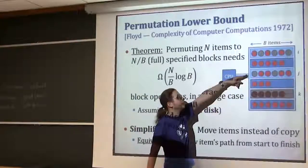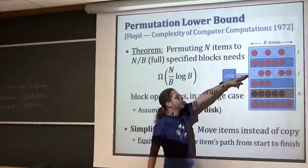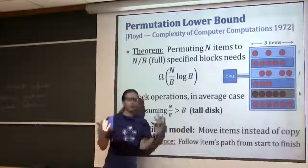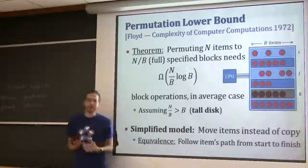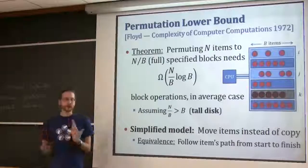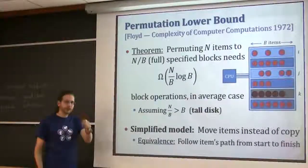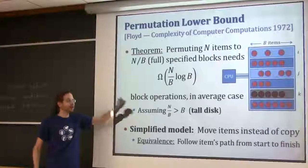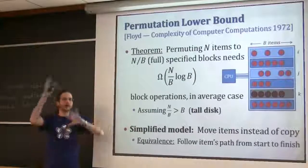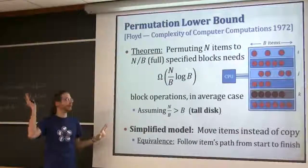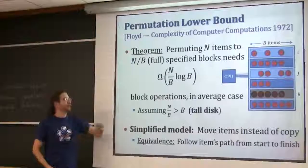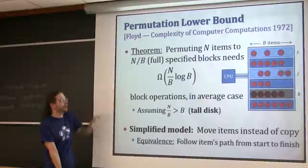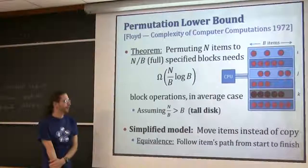I'm going to go through the proof of this theorem, because it's fairly simple. It's going to use a slightly simplified model where instead of copying items, you actually move items - so items would disappear after you put them in this new block. Because we're thinking about permutation problems, that doesn't really change anything. You can see what path each item follows to ultimately get to its target location, throw away all the extra copies, and keep that one set of copies - that will still be a valid solution.